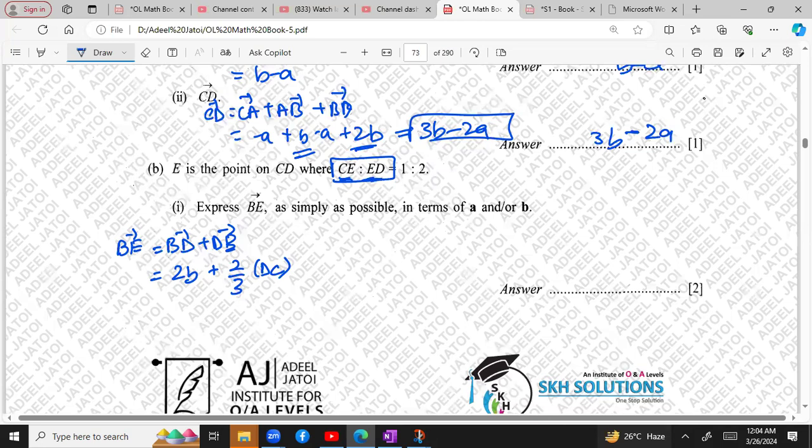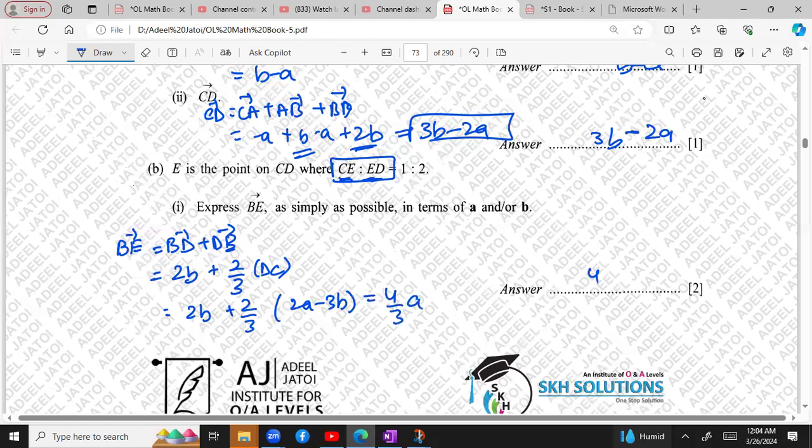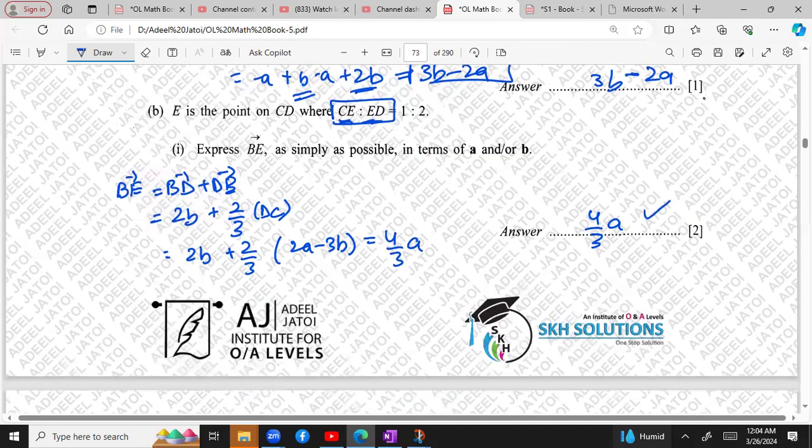CE and ED, that means somewhere from line C. So this becomes 2 upon 3 of DC. So considering this, 2 upon 3 and DC, what do we have? 2A minus 3B. So in the end, we are left with 4 upon 3A. So 4 upon 3A will be your answer when we are solving down this.